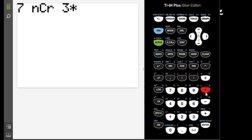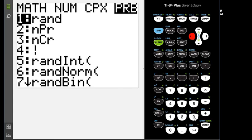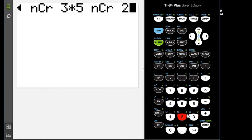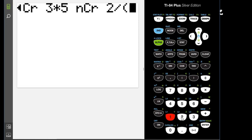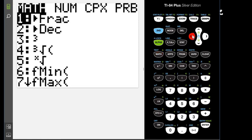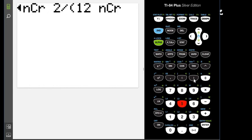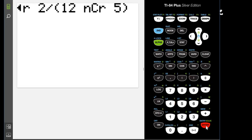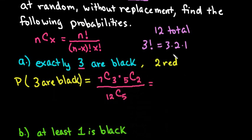And then I would do times, I want 5 things taken, then we have to go over to probability, 3, 2 at a time. And then we're going to divide this whole thing by 12 things taken 5 at a time. So this is what we would program into our calculator, and we get approximately 0.4419.